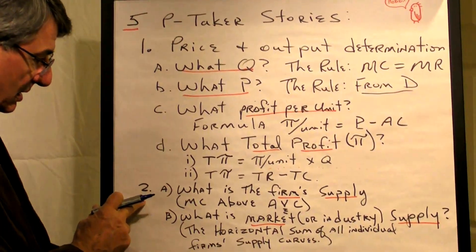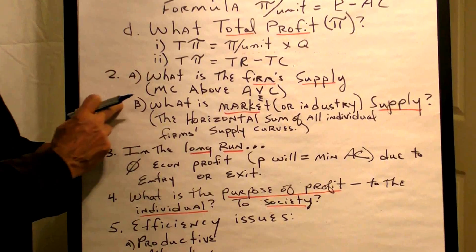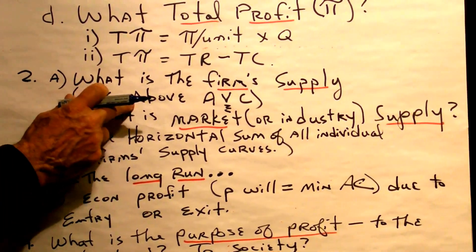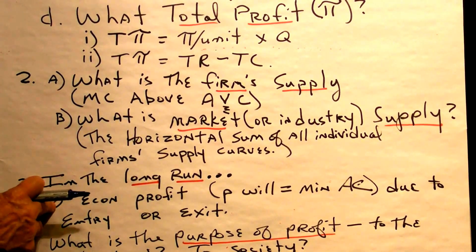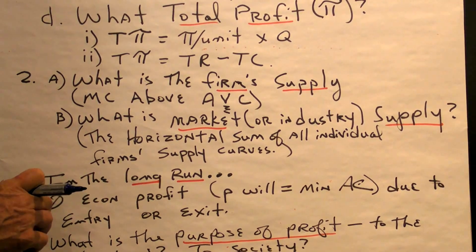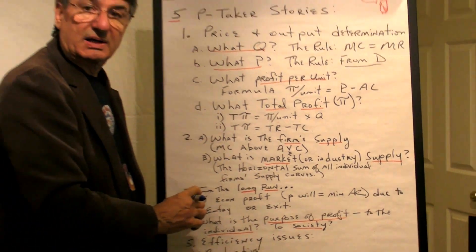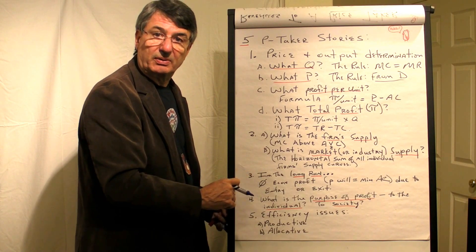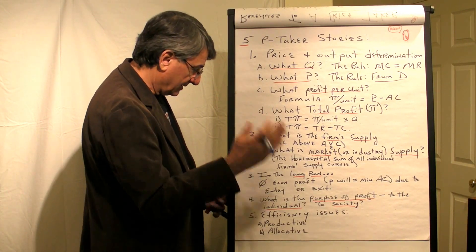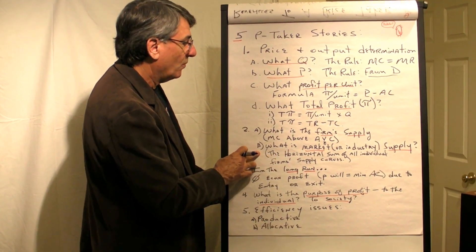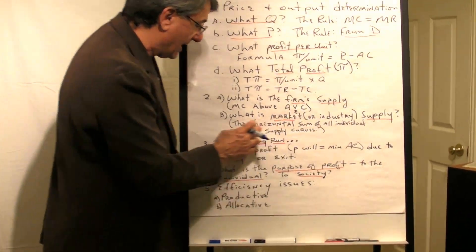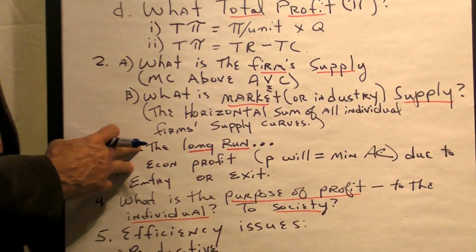The second question is, what is the firm's supply curve? The answer is, it's marginal cost above average variable cost. The firm will not produce at a price below its average variable cost because it would lose more by producing than by shutting down. What is the market or industry supply? It's the horizontal sum of all individual supply curves.